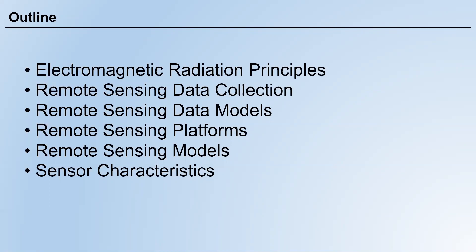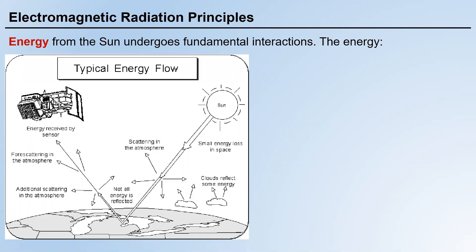Let's start with the very foundation of remote sensing, which is EMR — electromagnetic radiation. In remote sensing, especially in passive remote sensing, the sun is a source of energy. In passive remote sensing we use the energy from the sun as the energy of the remote sensing process. In active remote sensing, the sun is not the energy source — the sensors themselves are energy sources.